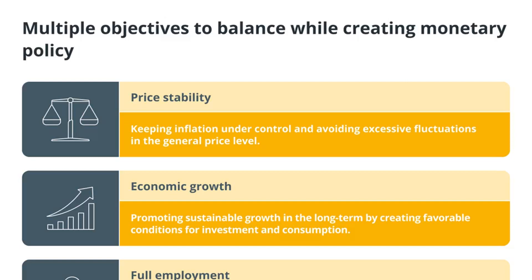To affect the price and accessibility of credit, this may entail altering the money supply, setting interest rates, or utilizing other instruments. The ultimate goal of monetary policy is to achieve and maintain a healthy economy. This usually involves balancing multiple objectives, such as ensuring economic stability, lessening the effects of economic shocks, and promoting sustainable economic growth.